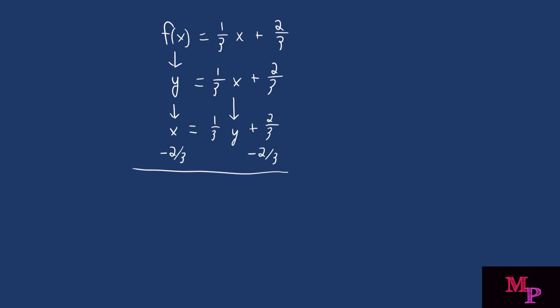And that's going to leave you with x minus two-thirds is equal to one-third times y. So you want to do the inverse of one-third, which you could think of as y divided by three. So now you want to multiply three to both sides.